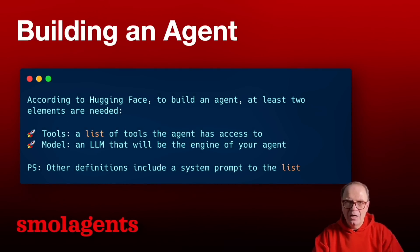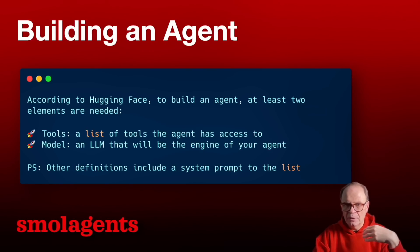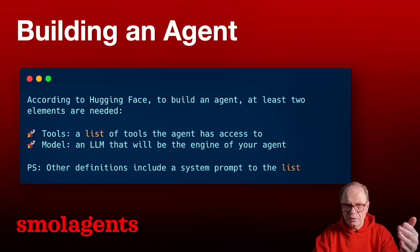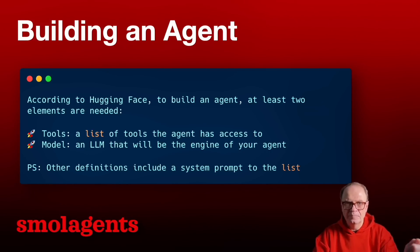So how do you build an agent? According to HuggingFace, at least two elements are needed: tools and a model. They do not explicitly mention system prompts and agent memory, but memory is built into the HuggingFace agent. My personal definition for an agent includes the ability to call tools, agent memory, and the ability to be specialized through system prompts.